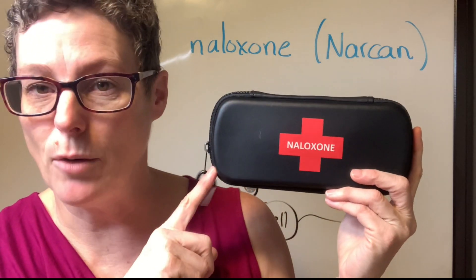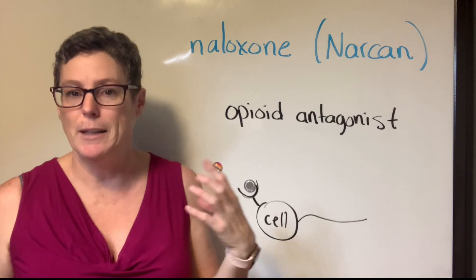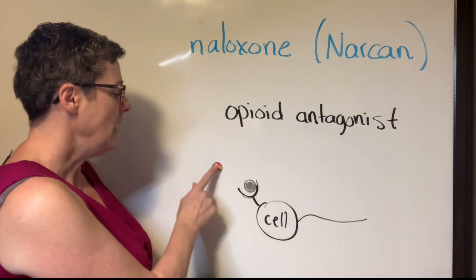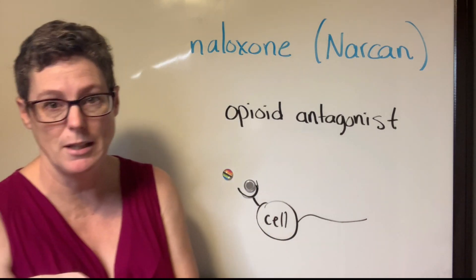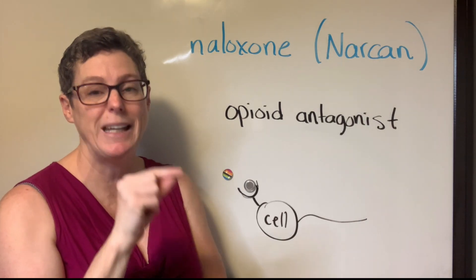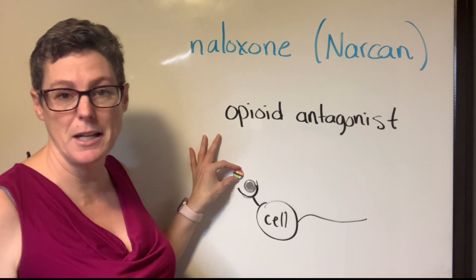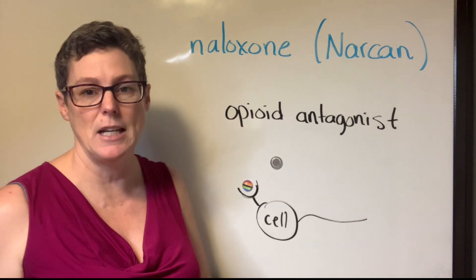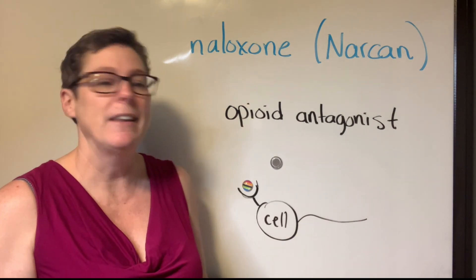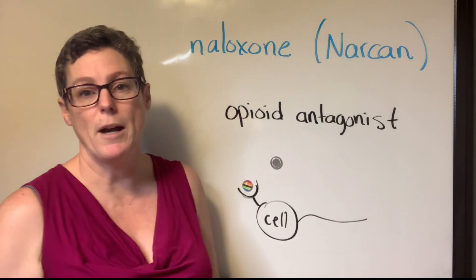So how does Narcan work, and why would we give it to reverse an opioid? Consider Narcan to be like the bully on the playground — although this is a really good bully. Narcan has a very strong affinity for the same receptor site as the opioid. When it sees that receptor site, it wants it and it's going to fight harder for it. So when Narcan enters the bloodstream and comes across an opioid, it bumps it out, takes its seat in the receptor site, and the signal to change the cell's function has stopped — the cell returns to normal functioning.